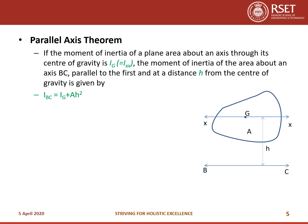Now let us cover two important theorems used in calculating Moment of Inertia. The first is the Parallel Axis Theorem. It states that if the Moment of Inertia of a plane area about an axis through its center of gravity is Ig, then the Moment of Inertia about a parallel axis BC at a distance h from the center of gravity is given by: Ibc equals Ig plus A·h². So if you know the centroidal Moment of Inertia, you can find the Moment of Inertia about any parallel axis using this equation.